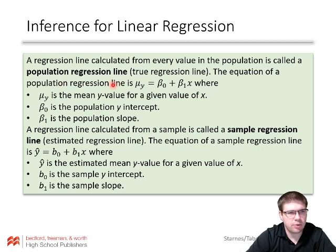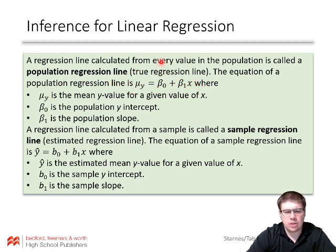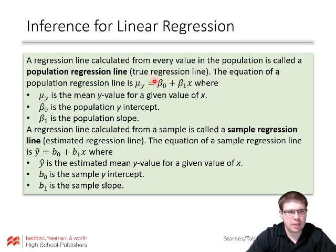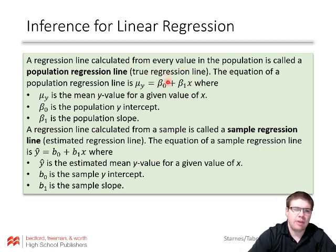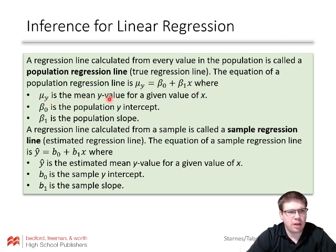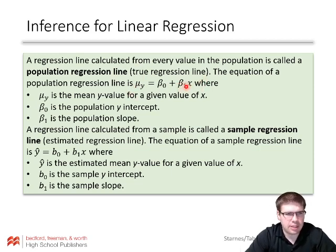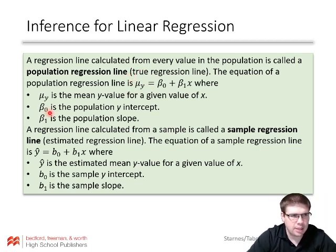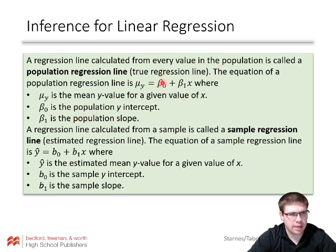The equation of a population regression line is mu sub y equals beta naught plus beta 1 x. The formula sheet used to show b naught plus b1 x, and now you'll see it written as alpha plus beta x. Beta naught is the population y-intercept, sometimes referred to as alpha. Beta 1 is the population slope, where mu sub y is the mean y value for a given value of x.